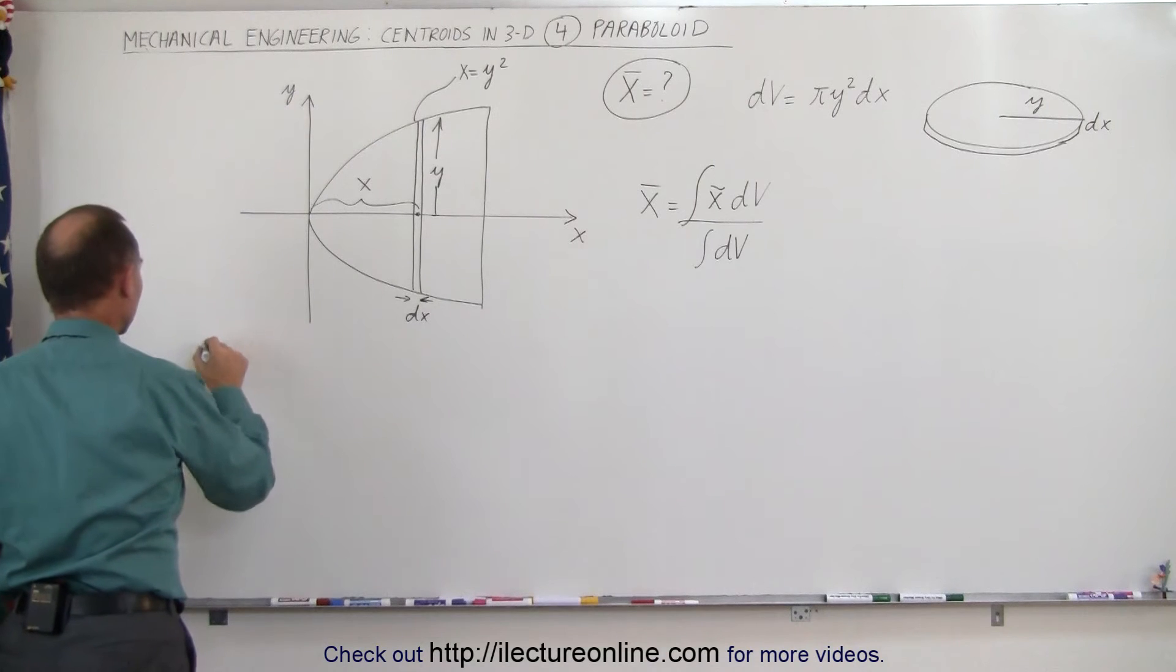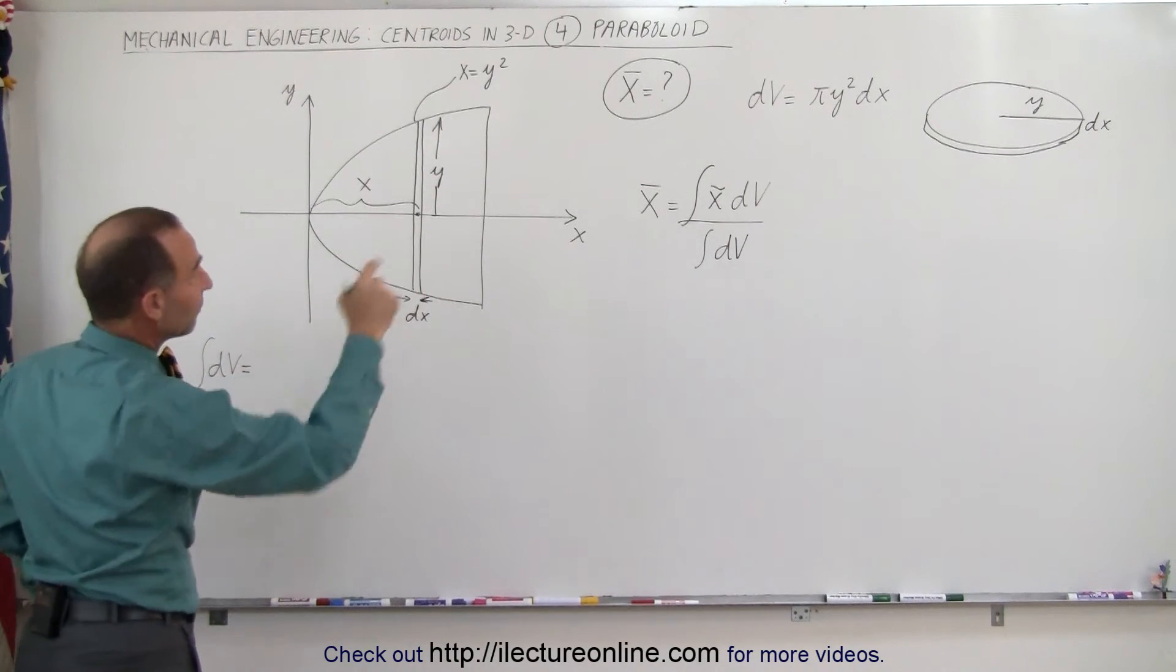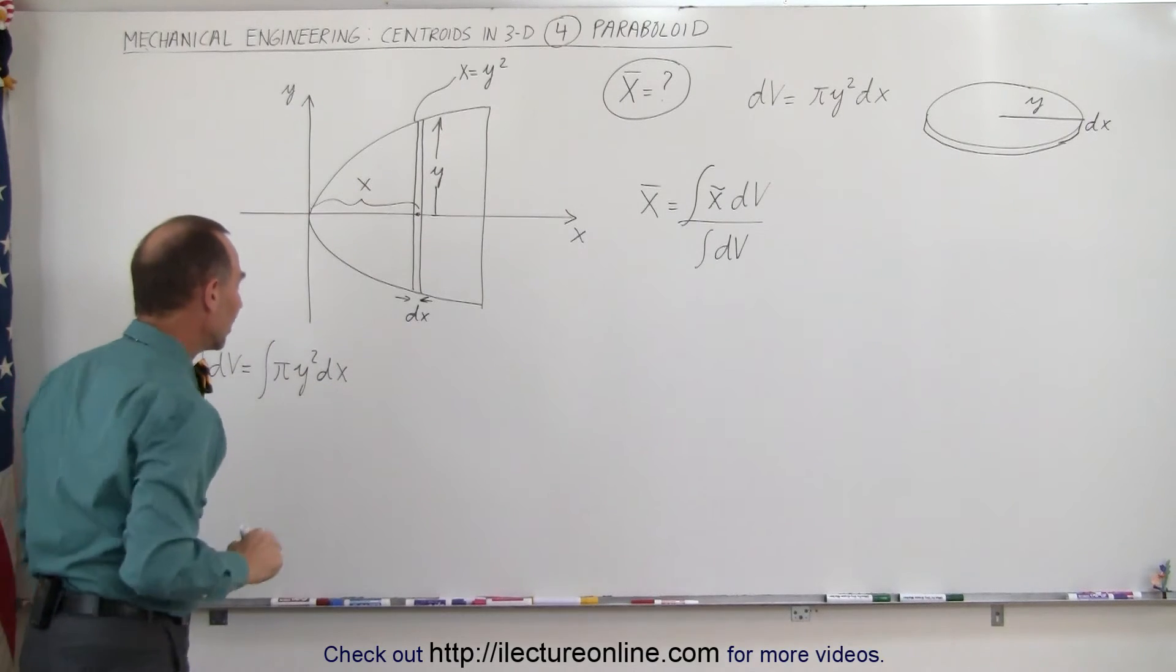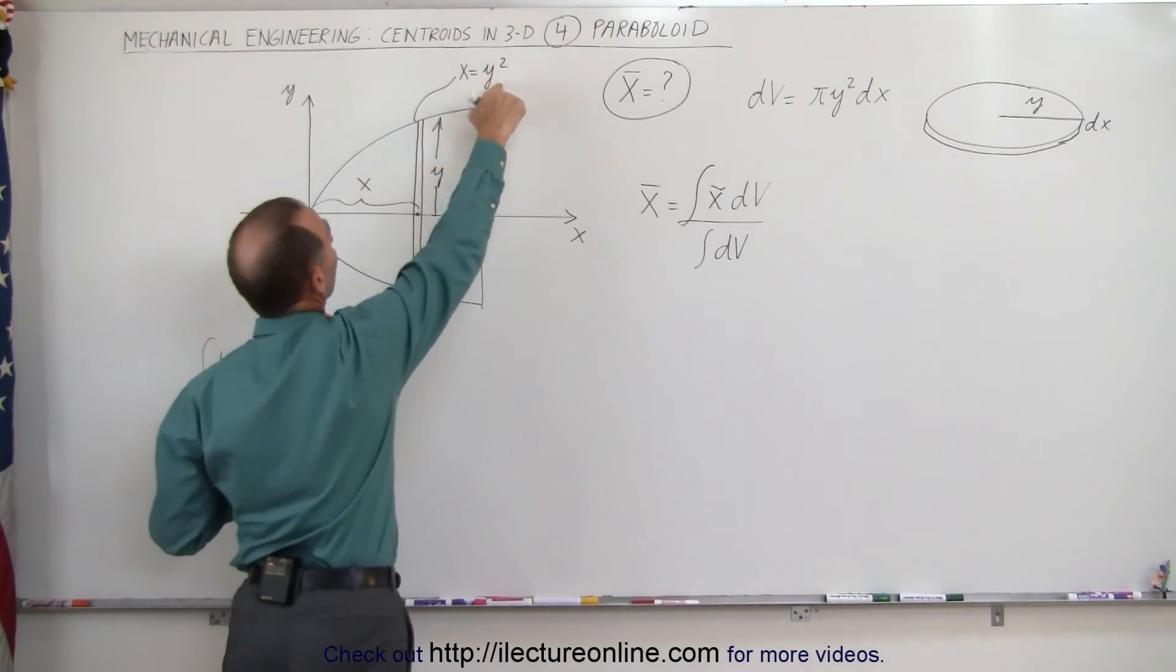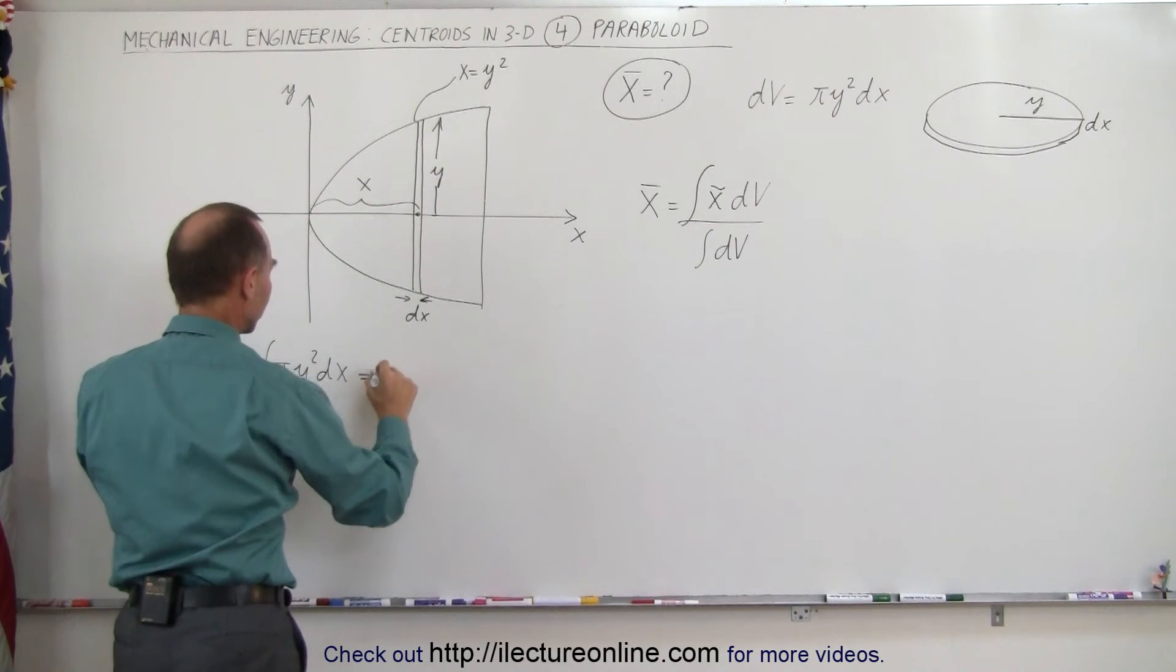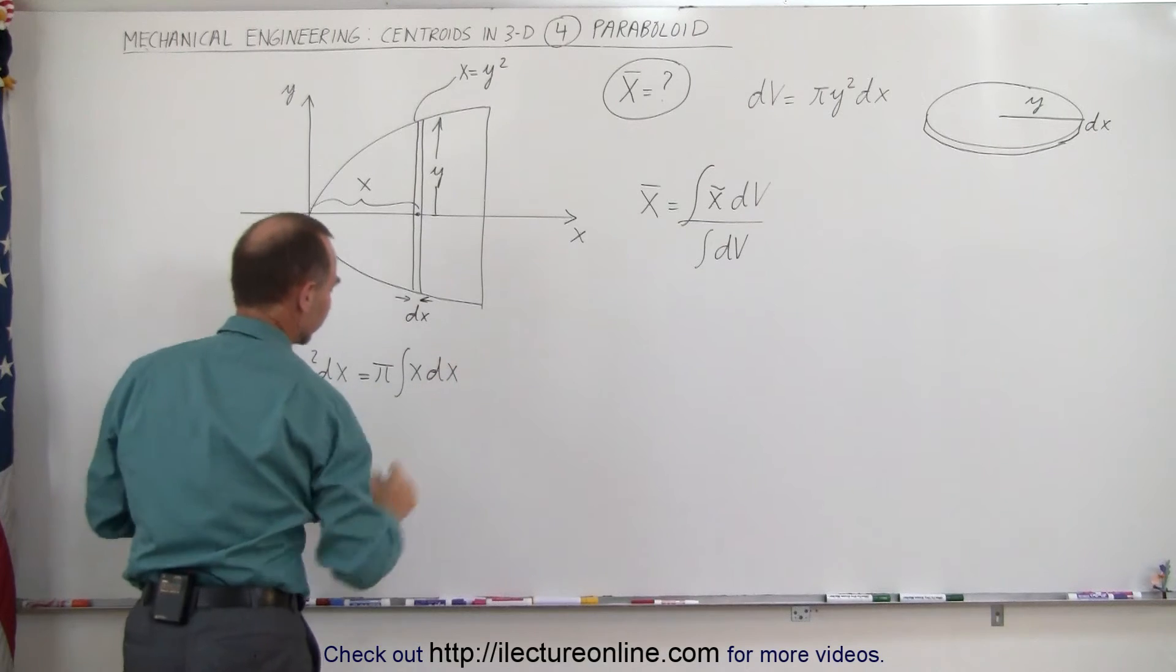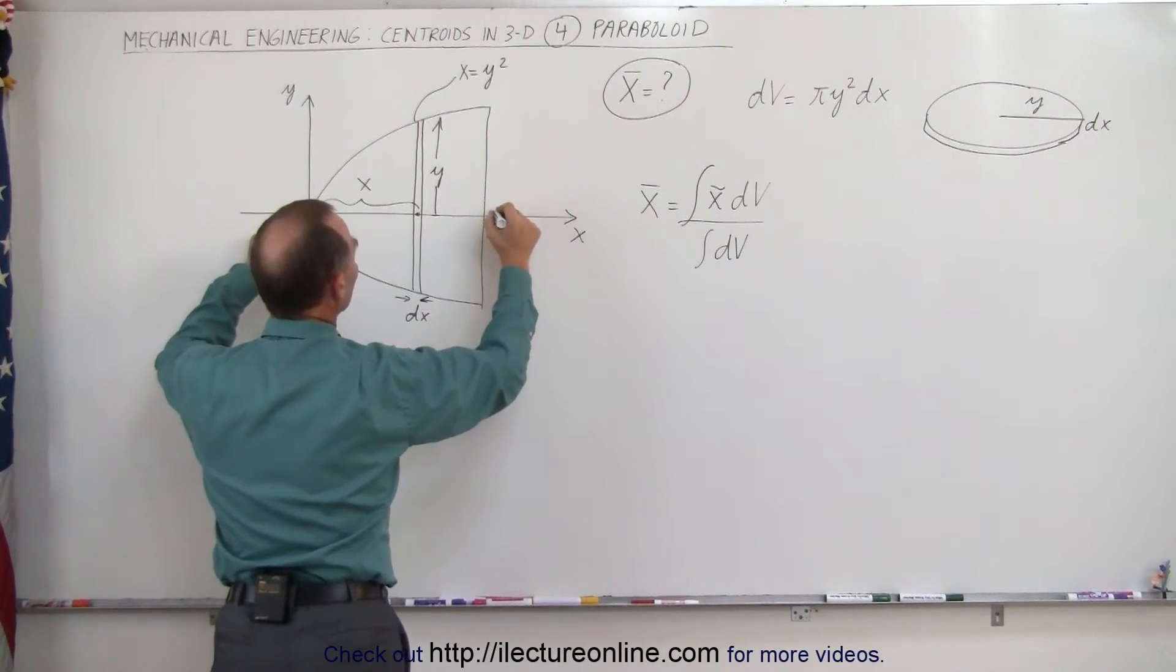Let's do that here. The integral of dv is equal to the integral of πy²dx, and we cannot have a y and a dx in the same integral, so we have to write y in terms of x. But here you can see that y² is the same as x. So we'll take the π out times the integral of x times dx, and assume that the distance from there to there is equal to h.